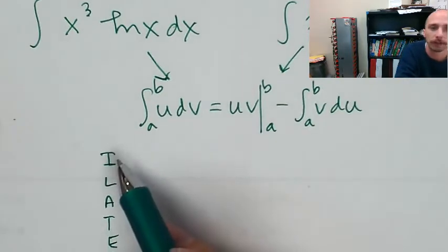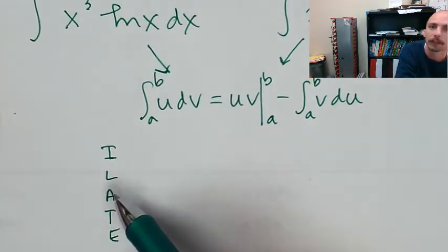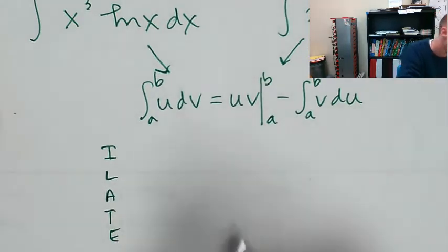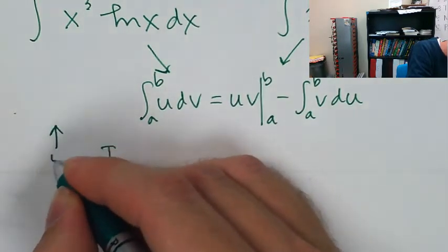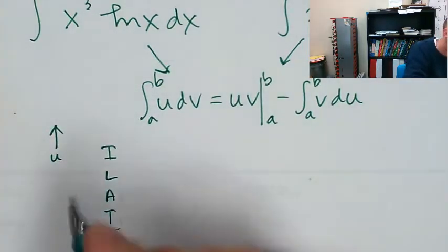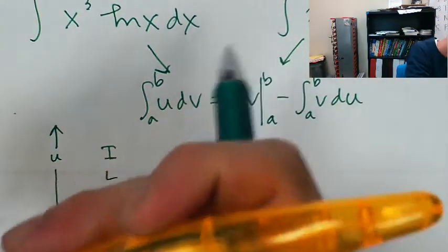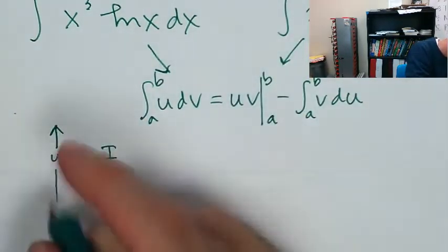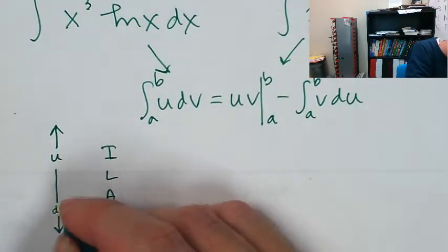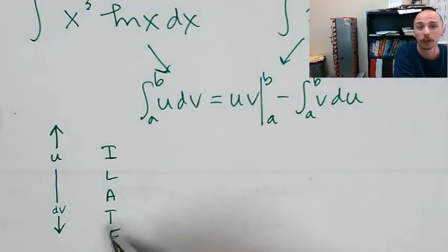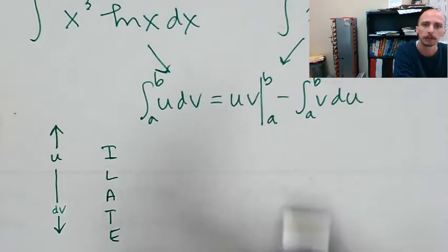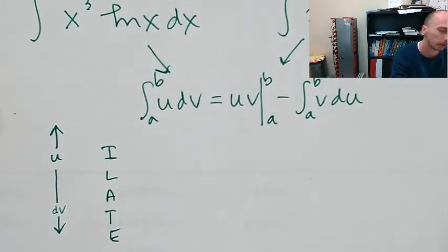When it comes to choosing U and DV, I use I-LATE. I is for inverse trig, L for log, A for algebraic (that's all the powers of x, square root x, one over x), T for trig, and E for exponential. Up here, the first one that you run into, that's what you're going to choose for U. The second one you run into is what you're going to choose for DV. If I had trig and exponential, I'd let U equal trig and DV equal exponential. That's integral of a product.